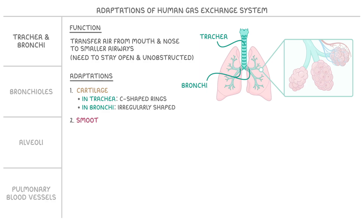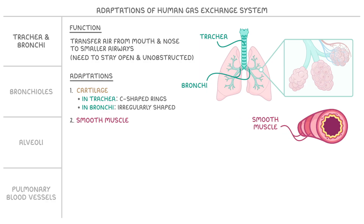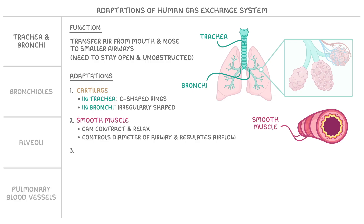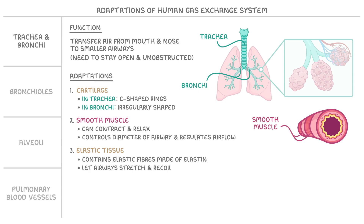Second, they're surrounded by smooth muscle, which we can see in this cross section through an airway. This muscle can contract and relax, controlling the diameter of the airway and regulating airflow, allowing your body to adjust how much air gets in and out. Third, these airways have elastic tissue that contains elastic fibres made of elastin, which let the airway stretch when you breathe in and then recoil back to their original shape when you breathe out.